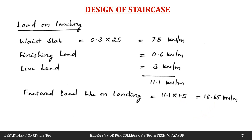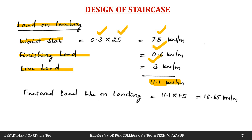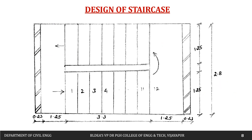Next, we calculate the load on the landing. Waist slab load = 0.3 × 25 = 7.5 kN/m. Adding finishing load 0.6 and live load 3 gives total = 11.1 kN/m. Factored load on landing = 11.1 × 1.5 = 16.65 kN/m.